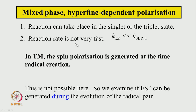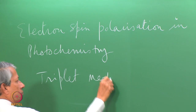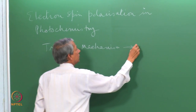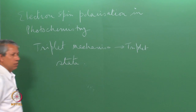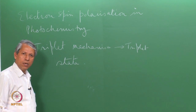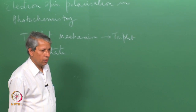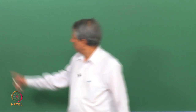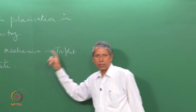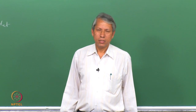This type of signal arises when the reaction can take place from either the singlet or triplet state. The triplet mechanism requires a triplet state. If the reaction takes place in the triplet or singlet state, the polarization mechanism we are about to discuss can work. Unlike the triplet mechanism, the reaction need not be very fast compared to the spin-lattice relaxation of the triplet state.